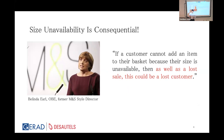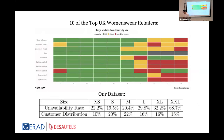Not all customers experience the same level of size unavailability. This figure shows size availability across different sizes for 10 of the top UK womenswear retailers. We observe a pattern for sizes 14 and above — called plus sizes — where almost all retailers have less size availability, while maintaining a really good level for other sizes.